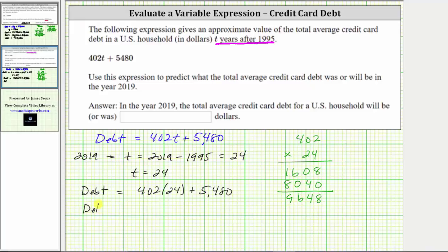Which means the debt is equal to 9,648 plus 5,480. And now we determine the sum. Adding, eight plus zero is eight, four plus eight is 12, record the two, perform an exchange with the one. Six plus four is 10, plus one is 11, record the one, perform an exchange. Nine plus five is 14, plus one is 15, which gives us 15,128.